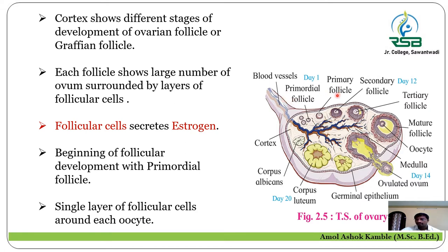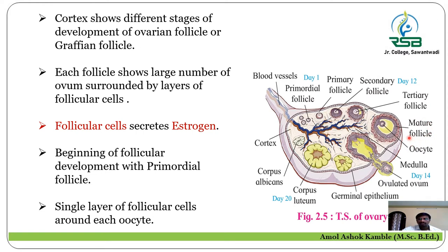The primordial follicle gives rise to the primary follicle, then primary to secondary, secondary to tertiary, and tertiary to the mature Graafian follicle. At its center, it shows the oocyte, and that oocyte is released on day 14. The released ovum — also called the oocyte — is surrounded by a single layer of follicular cells around each oocyte.